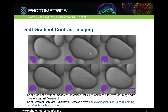The first five images — the entire first row and the first two images on the second row — are each taken with a different rotation of the dot gradient accessory. The bottom right-hand image is a combination of all of the images put together, which has greater detail than any of the single images taken individually.